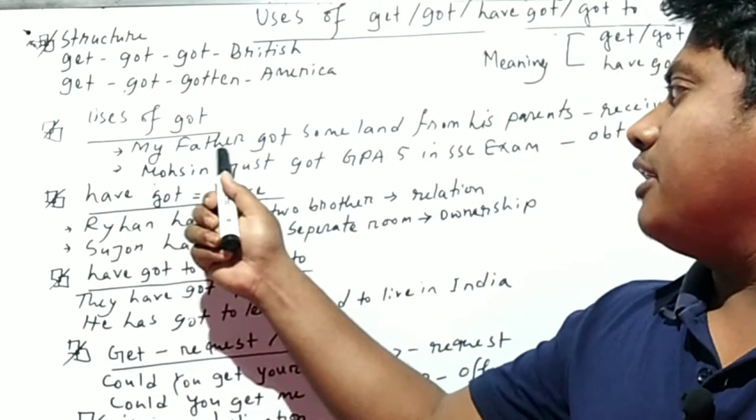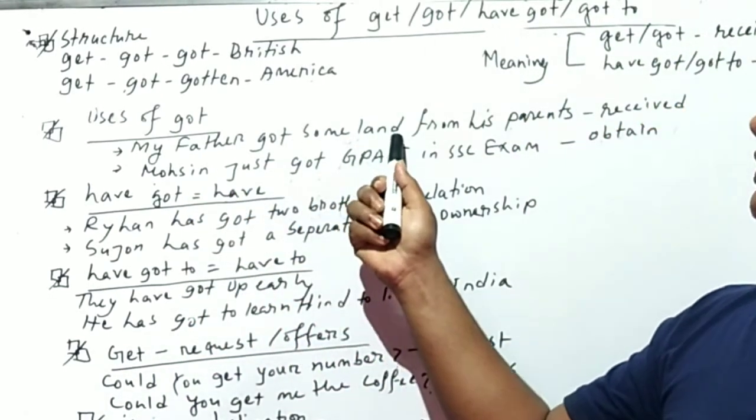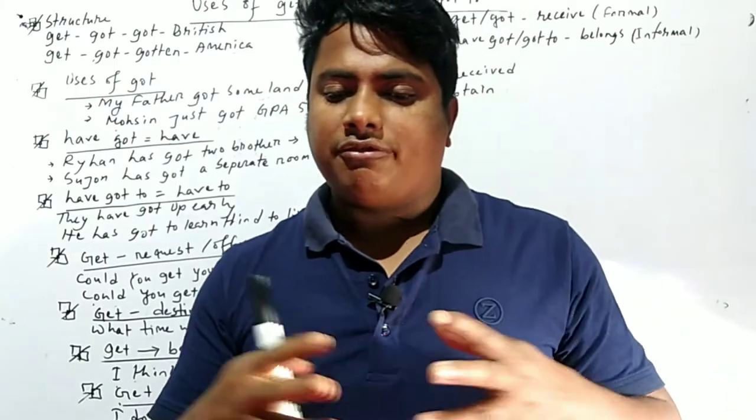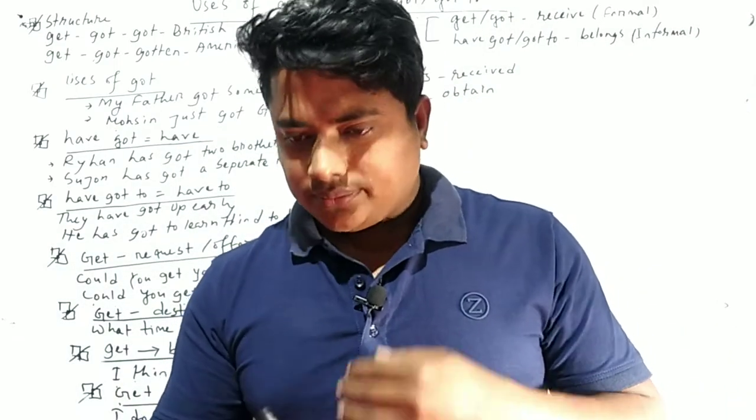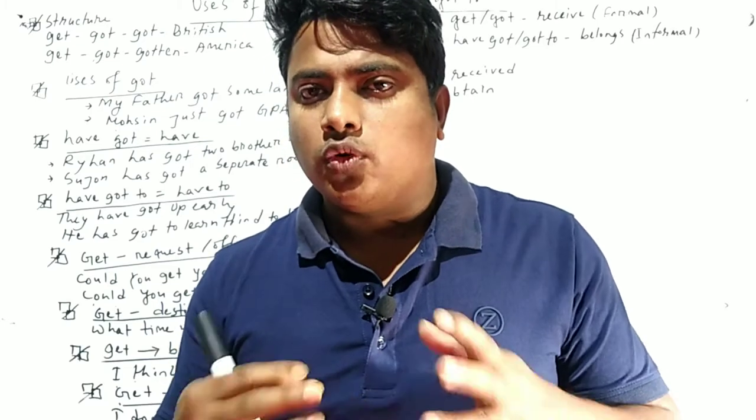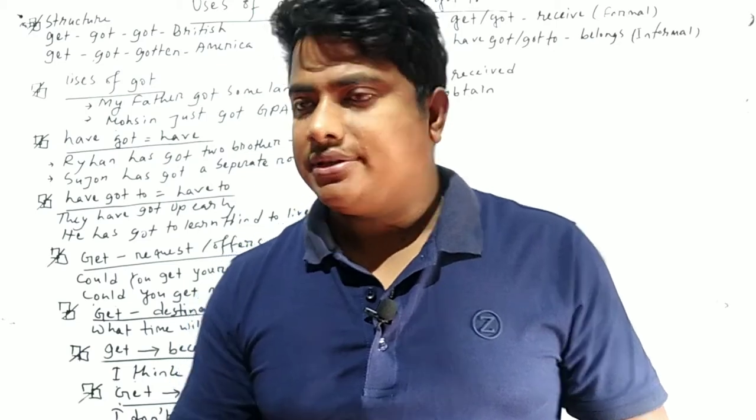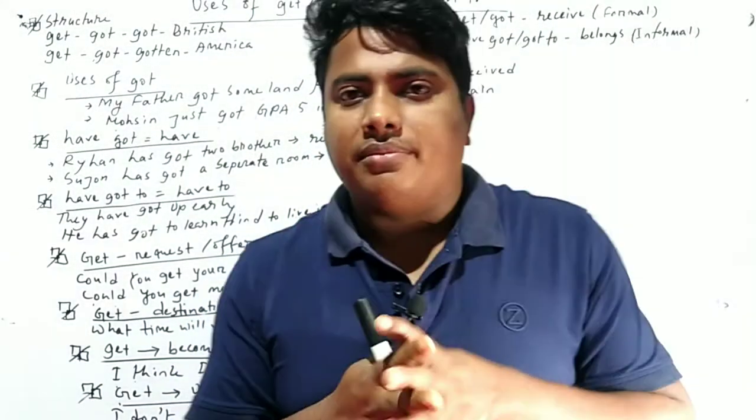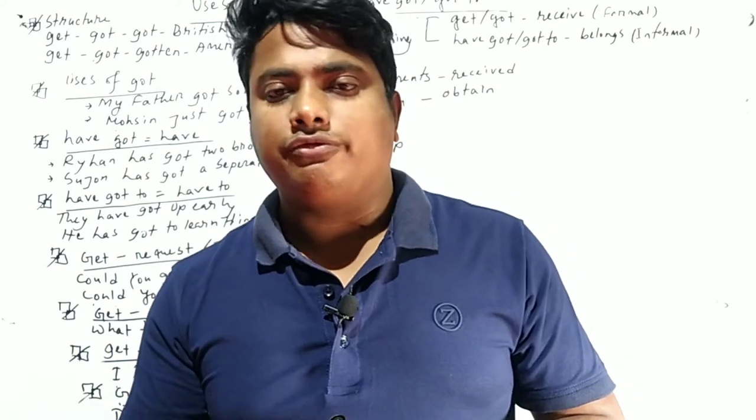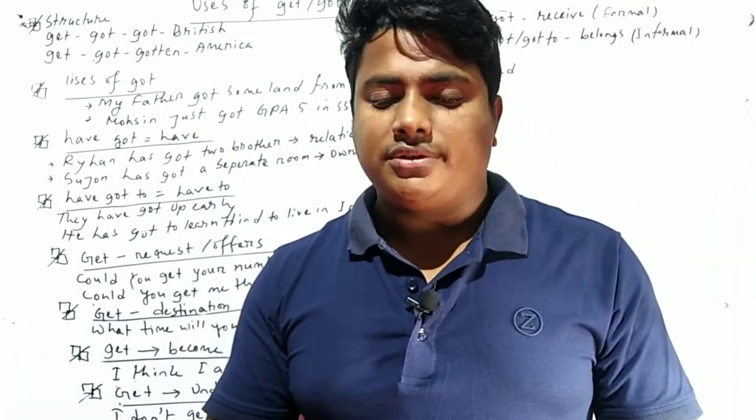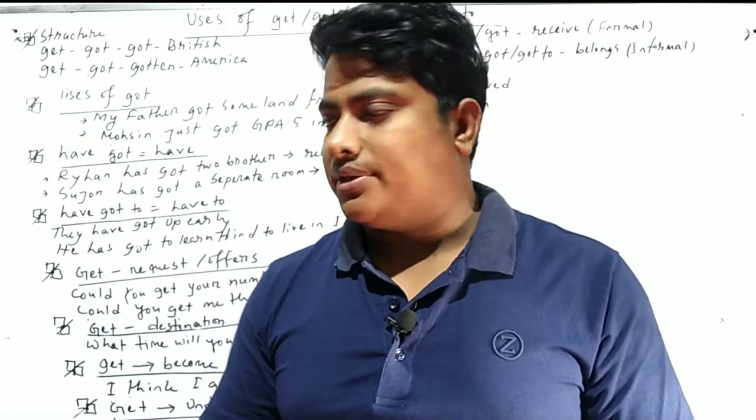My father got some land from his parents. What does the sentence express? The sentence expresses ownership or getting something from parents. Actually, it means receive. My father got some land from his parents.